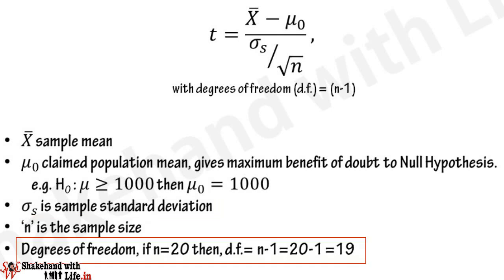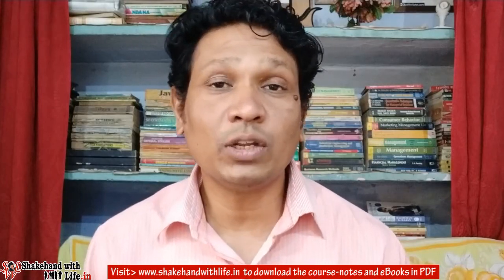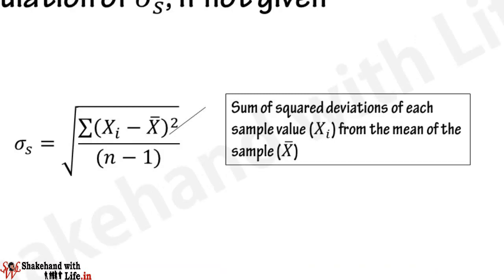The degrees of freedom can be calculated as: if n equals 20, then degrees of freedom is n minus 1, equal to 19. In case the sample standard deviation is not given, it can be calculated using the formula: sigma-s equals the square root of the sum of squared deviations of each sample value xi from the sample mean x-bar, divided by n minus 1. I'll show you later in this video how to calculate the sample standard deviation using this formula.